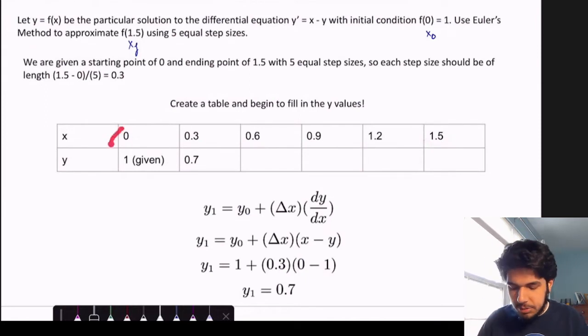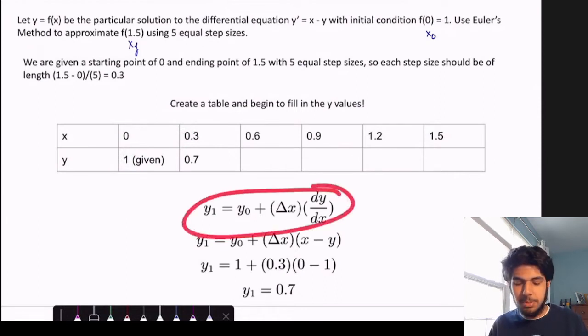We're given at x equals 0, our y value is 1. So now we would want to find the y value at 0.3, which is the next step. And we'll use this formula here.